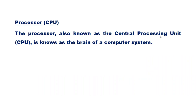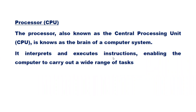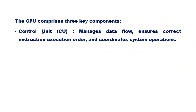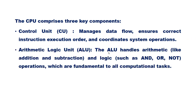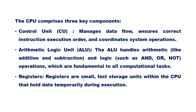The processor, also known as the central processing unit, is known as the brain of a computer system. It interprets and executes instructions, enabling the computer to carry out a wide range of tasks. The CPU comprises three key components: the control unit, which manages data flow and ensures correct instruction execution order; the arithmetic logic unit (ALU), which handles arithmetic and logic operations; and registers, which are small, fast storage units within the CPU that hold data temporarily during execution.